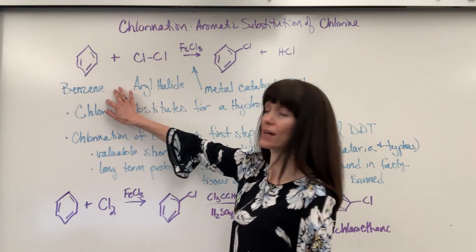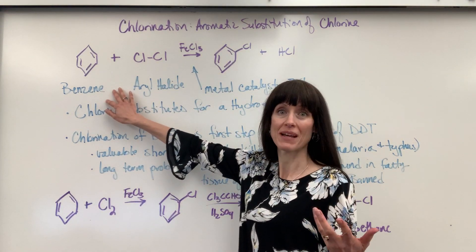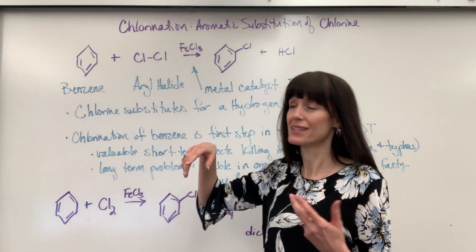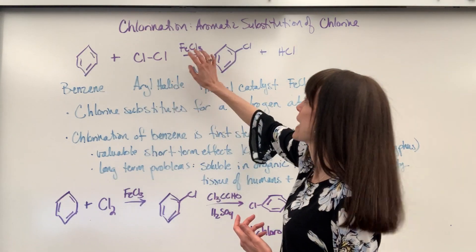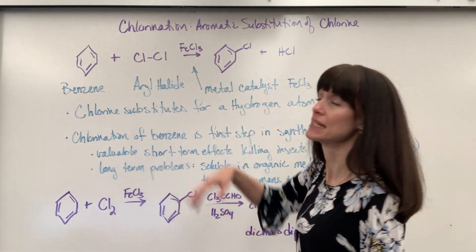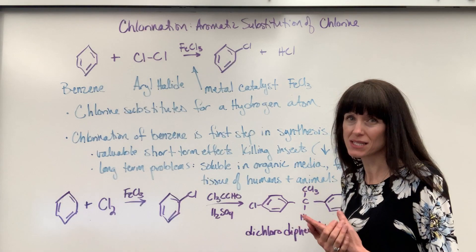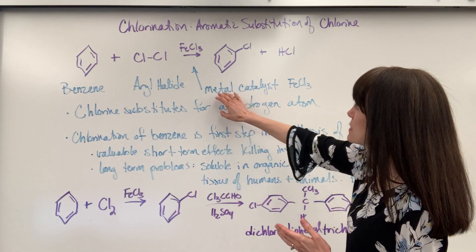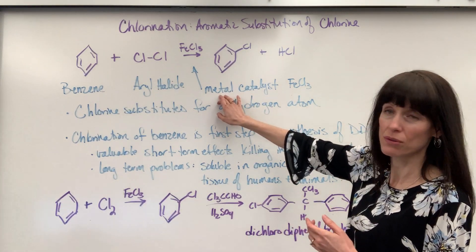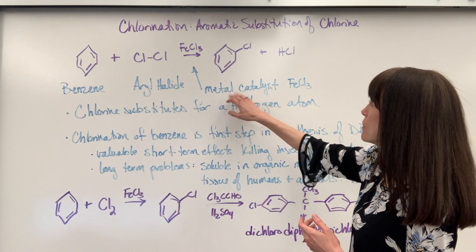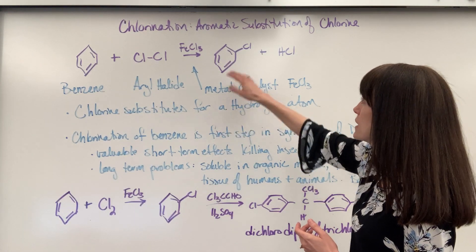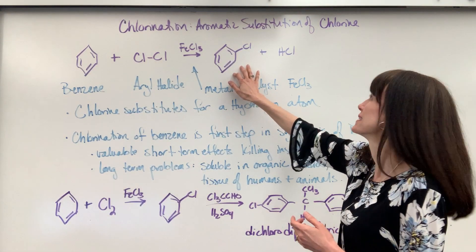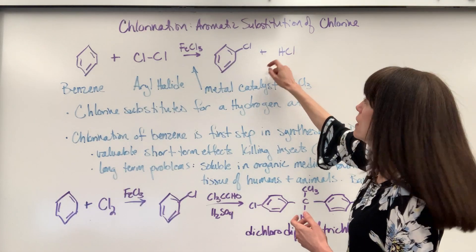So you're going to have your aromatic — there's the benzene — and we add to it chlorine. There's your aryl halide. This has to be done in the presence of a metal catalyst, so we're going to use iron(III) chloride as a metal catalyst, and it's going to produce chlorobenzene with hydrogen chloride.